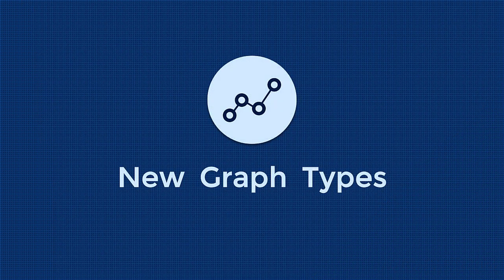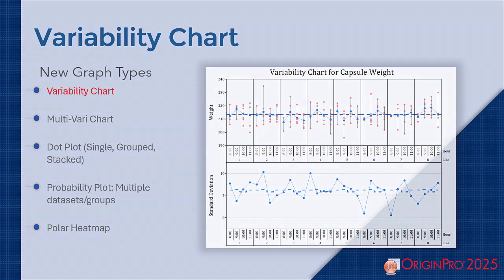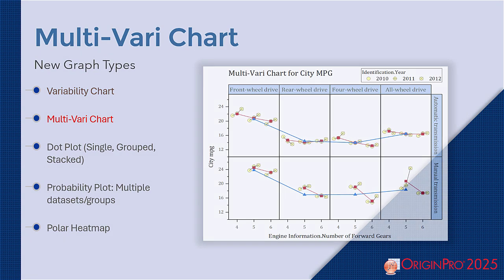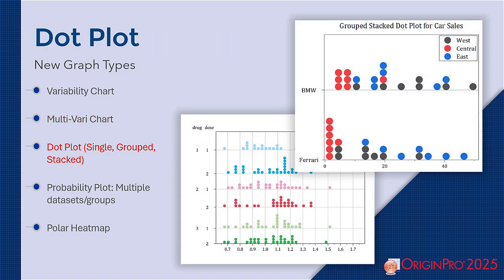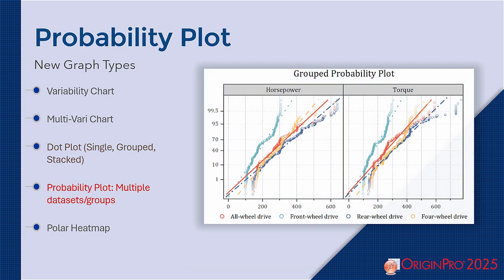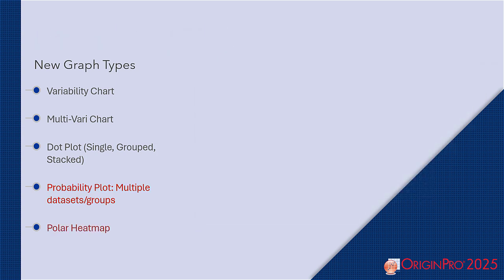Now let's take a look at some of the new graph types. We have the variability chart, multi-vary chart, dot plots for single, grouped, or stacked data, a probability plot that supports multiple data sets or groups, and the polar heat map.